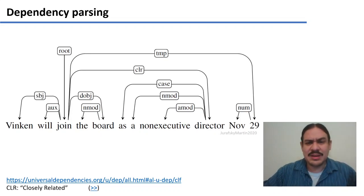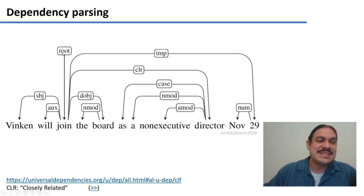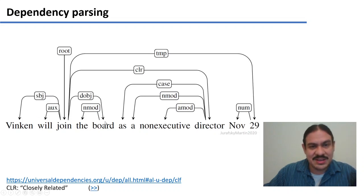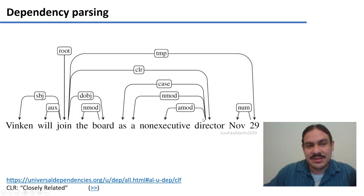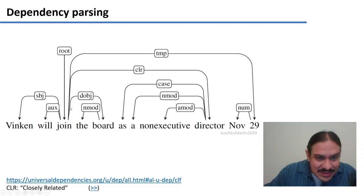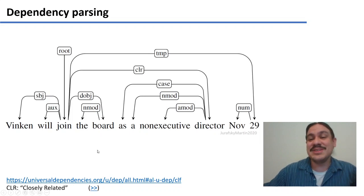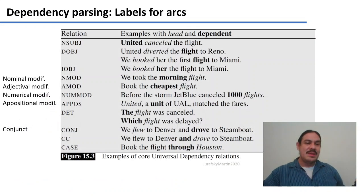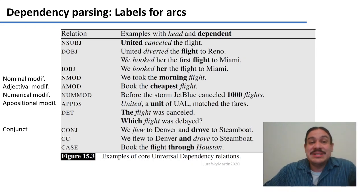Here's another example with the sentence 'Winken will join the board as a non-executive director on November 29.' Again, the root is set on the verb. You have relationships like auxiliary verb, subject of a sentence, direct object, and adjectival modifier. There's also one called 'closely related' — for example, 'join' and 'director' are defined as closely related. There are many types of arcs; these are just a few examples. The italics marks the head of the arc, and the bold marks the dependent.